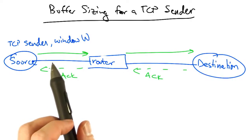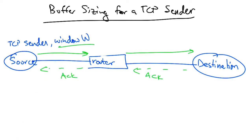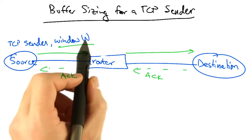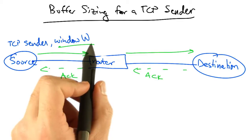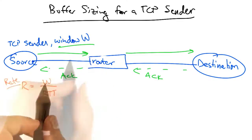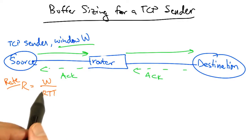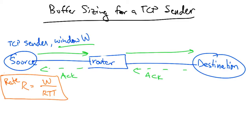Let's suppose that we have a TCP sender that's sending packets, where the sending rate is controlled by the window W, and it's receiving ACKs. Now at any time if the window is W, only W unacknowledged packets may be outstanding. So the sender's sending rate, R, is simply the TCP window W divided by the round trip time of the path. So the rate is W over RTT.